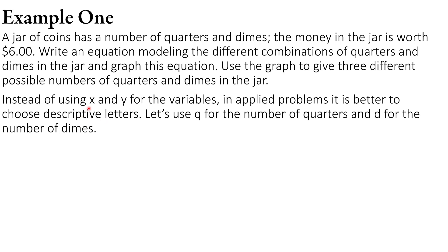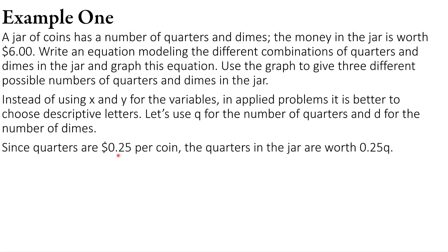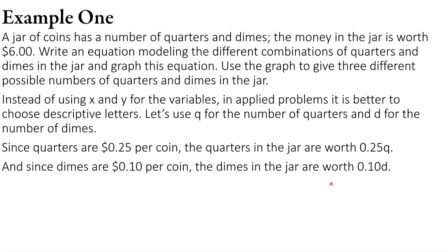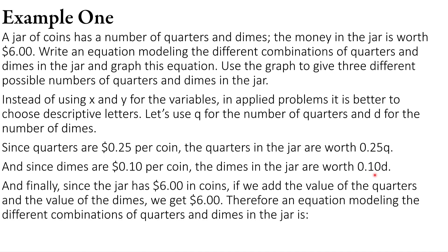In applied problems, it's better to use variables that are more descriptive rather than x and y. We'll use q for the number of quarters and d for the number of dimes. Since quarters are worth $0.25 per coin, the quarters in the jar are worth $0.25q. For example, if you had six quarters, you'd do six times $0.25 to see how much money you had. Since dimes are worth $0.10 apiece, we multiply d by 0.10 for the dime value. Since the jar has $6 in coins, adding both together gives us the standard form equation: 0.25q + 0.10d = 6.